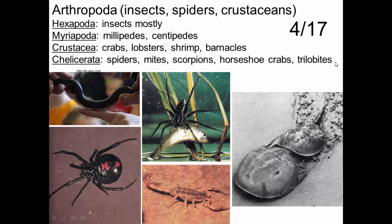Trilobites at one point in Earth's history were a very major organism. You can see a number of examples here — millipedes can get quite large, sometimes arthropods can actually kill vertebrates, and horseshoe crabs can get quite large. If you ever get the chance to go to a beach during horseshoe crab mating season, it's quite the sight.